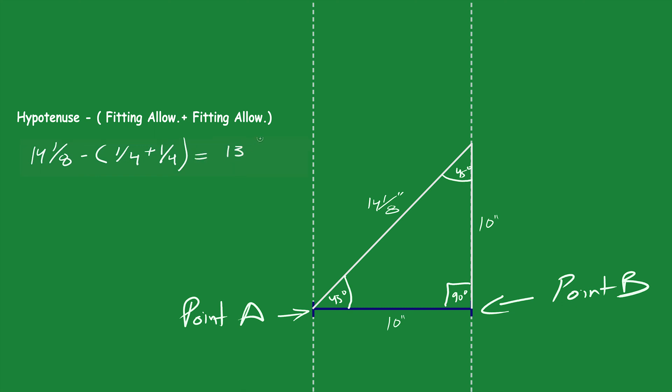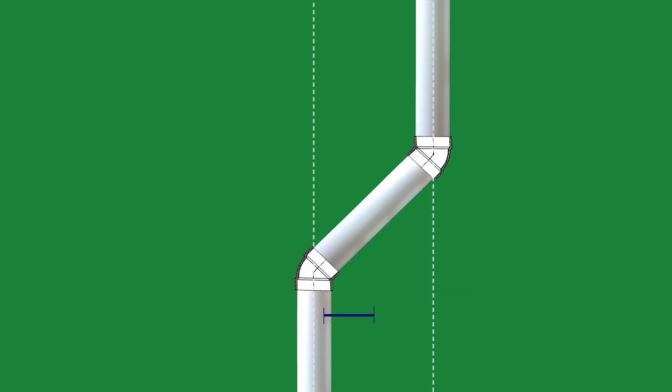Cut the pipe to this length and you will create a perfect 45 degree offset. This method will work for any size pipe.